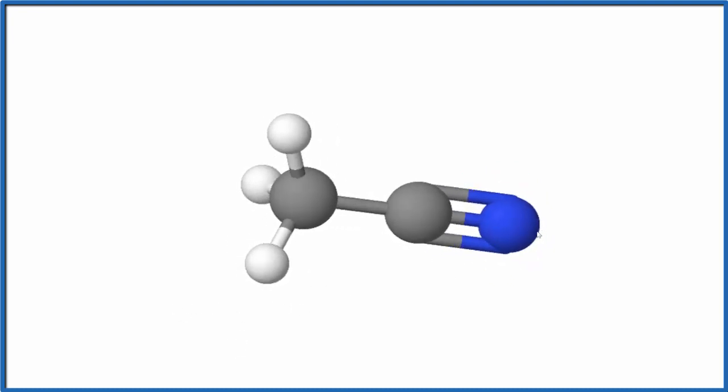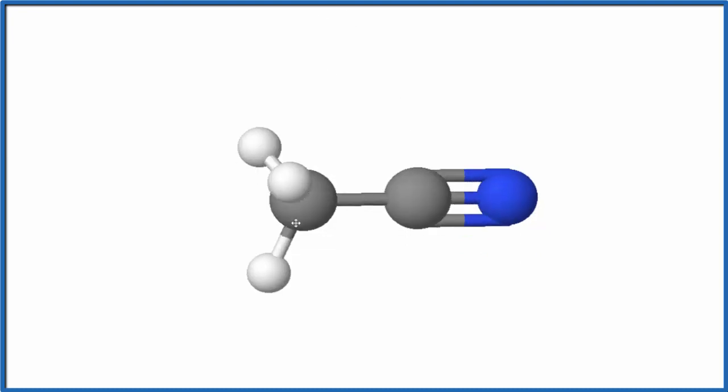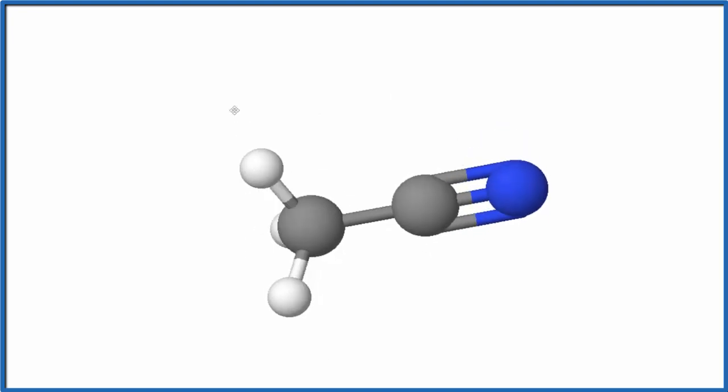We know that nitrogen is more electronegative than carbon. Because it's more electronegative, and the difference is greater than 0.5, this will be a polar molecule.